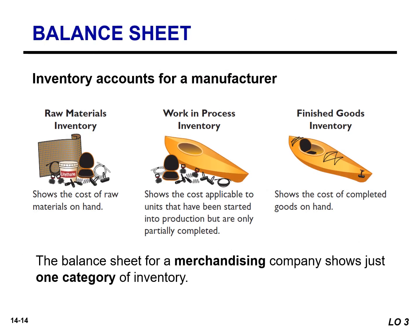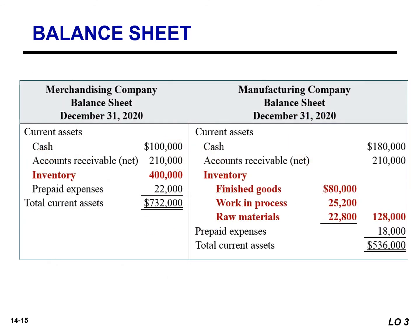The balance sheet for a merchandising company shows just one category of inventory, whereas the balance sheet for a manufacturer may have three inventory accounts. The raw materials inventory shows the cost of raw materials on hand. The work in process inventory shows the cost of our partially completed products. And the finished goods inventory shows the cost of our completed products. Finished goods inventory is to a manufacturer what inventory is to a merchandiser. The current assets section contrasts the presentation of inventories for both types of companies.